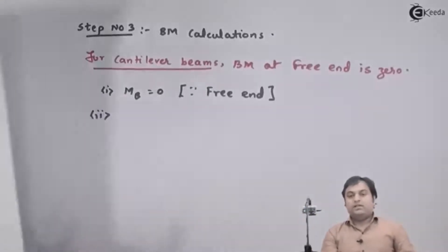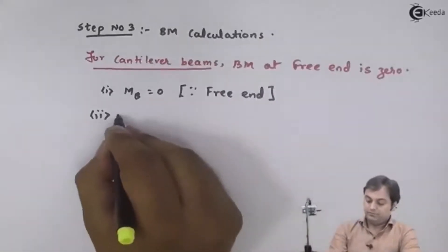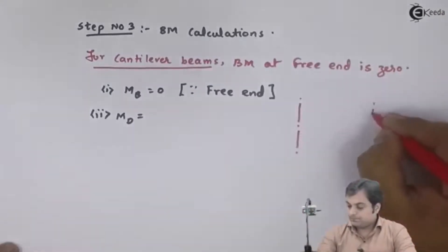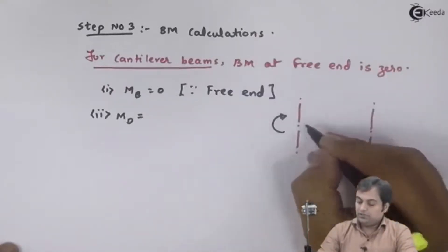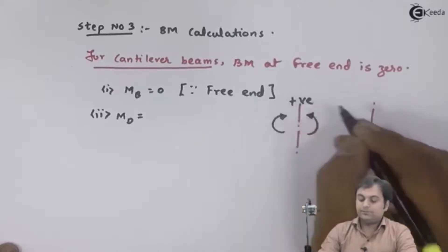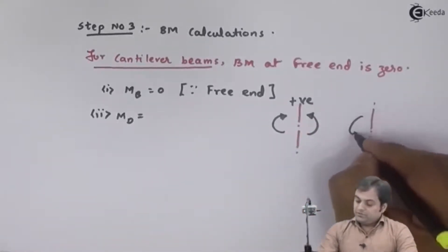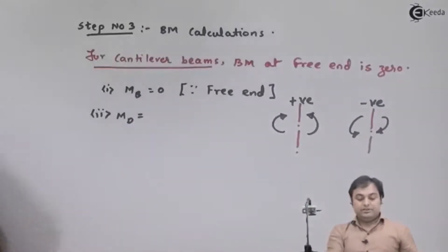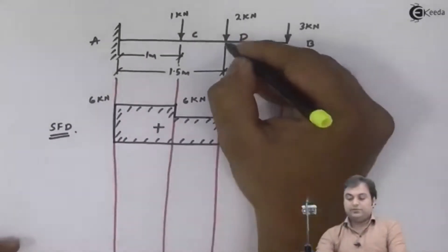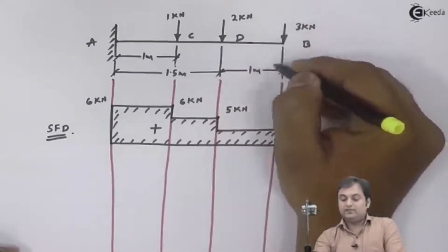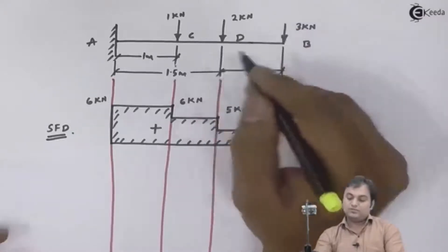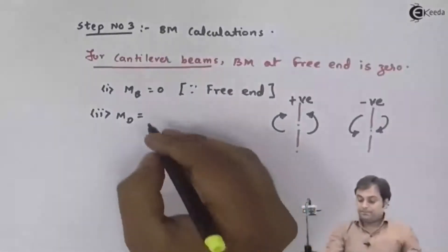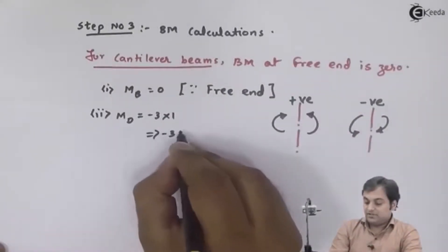Next, calculating bending moment at point D. Using the sign convention — clockwise moment to the right of section is negative — to the right of D there is only one force, 3 kN, producing a clockwise moment. So bending moment at D equals minus 3 into 1, that is minus 3 kNm.